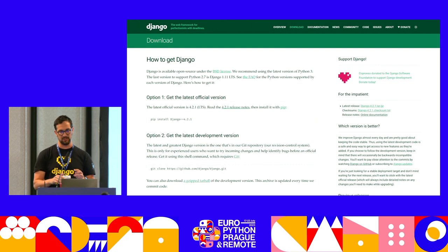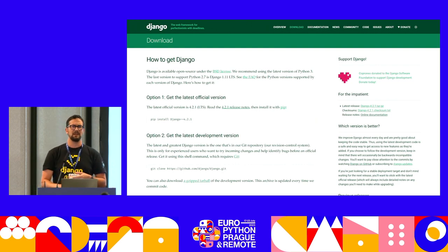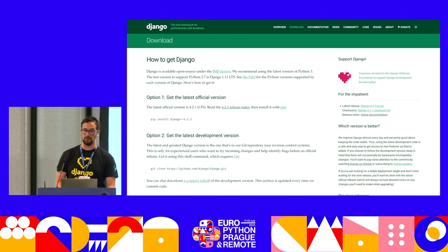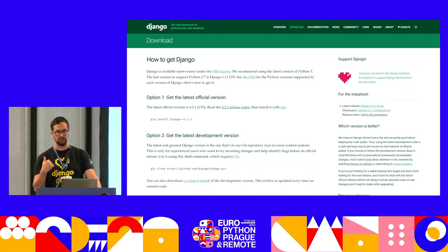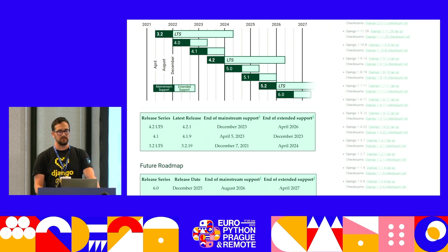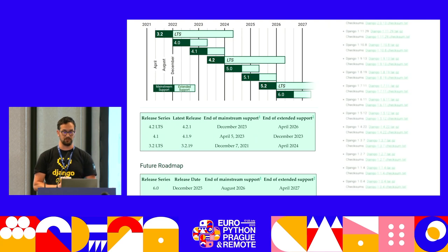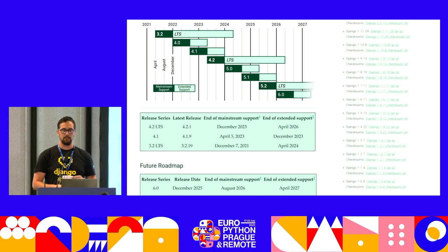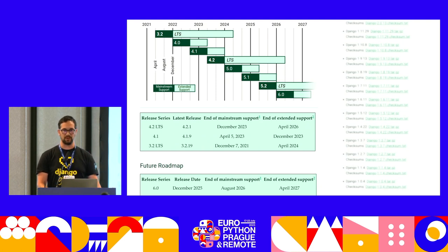This is the same download page as you can see today. It has a new theme and contains more information about different Django versions and all the methods to download and install it as a Python package. In the same page, you can also find an interesting graph with the present and future Django versions, which I find very useful to plan project maintenance based on release dates and end-of-life dates for different versions.